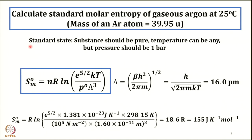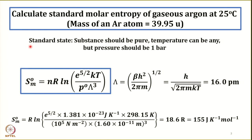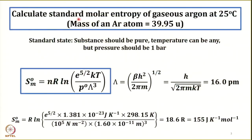Let us now discuss the applications of the formulae we have derived so far. The first example: calculate the standard molar entropy of gaseous argon at 25 degrees centigrade, with molar mass given. Before attempting to solve a problem, it is wise to look at the problem statement carefully and see what information is given. The question asks for standard molar entropy — standard means we calculate entropy under standard state conditions.